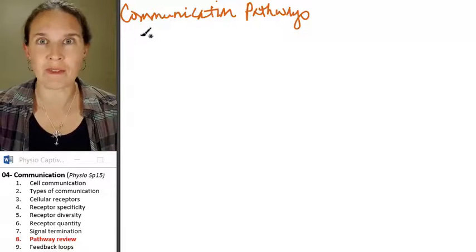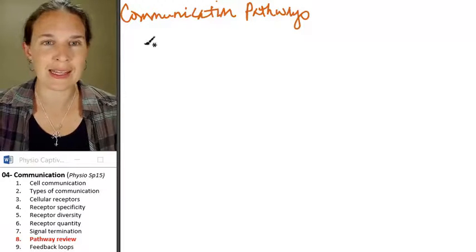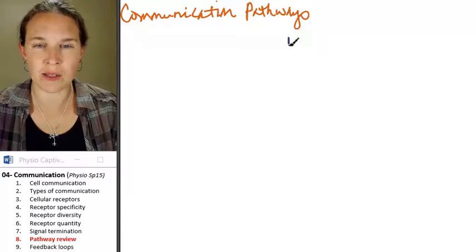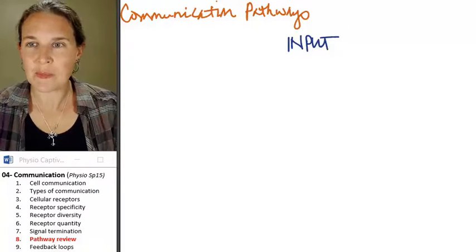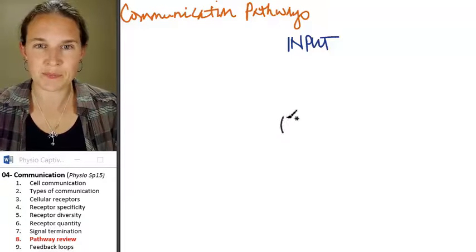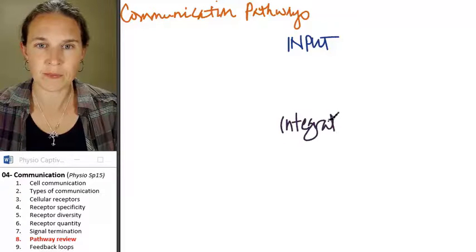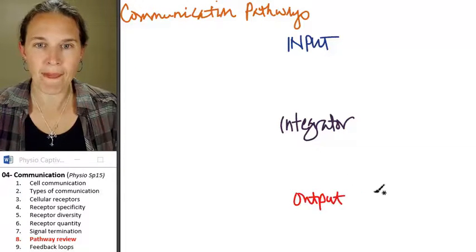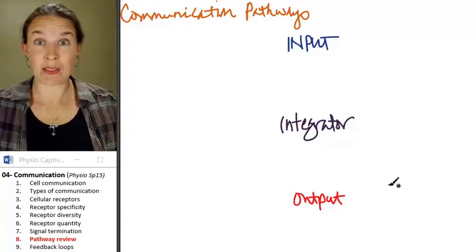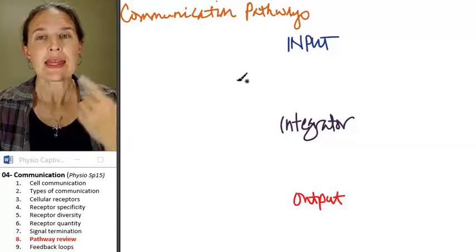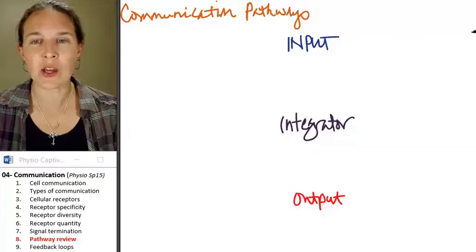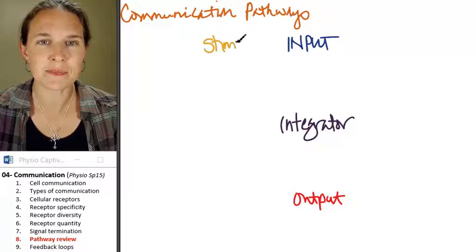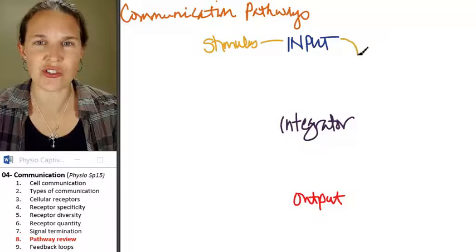Every pathway has three parts. All of them have these three parts. And so I'm going to give them to you. We have some sort of input. You know what? I'm going to do it in the middle here. We have some sort of integrator. And we have some sort of output. And these are my three components of every possible pathway. The input has to begin with a stimulus. We got to have a stimulus. And the stimulus is like what starts the input.